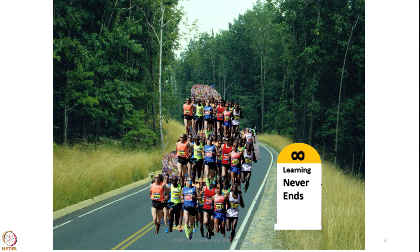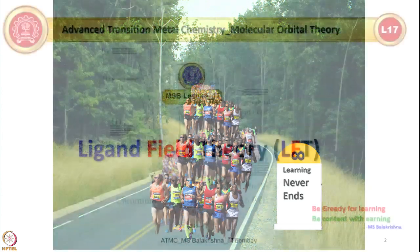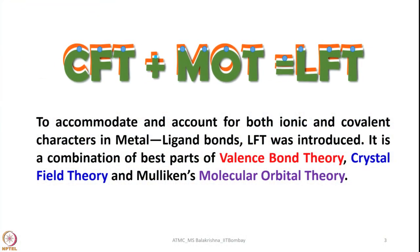So with this let us continue learning chemistry, especially chemistry of transfer elements. Today's focus would be on ligand field theory. Until the last lecture I was discussing about crystal field theory and its utility in understanding coordination chemistry, and why people switched to ligand field theory. To accommodate and account for both ionic and covalent characters in metal-ligand bonds, ligand field theory was introduced. It is a combination of the best parts of valence bond theory, crystal field theory, and Mulliken's molecular orbital theory.